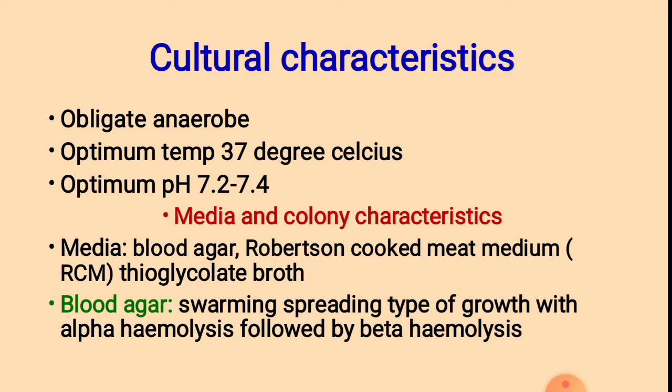Cultural Characteristics: Clostridium tetani is an obligate anaerobe. The optimum temperature is 37 degrees Celsius and optimum pH is 7.2 to 7.4. Media used for cultivation include blood agar, Robertson cooked meat medium, and thioglycollate broth.